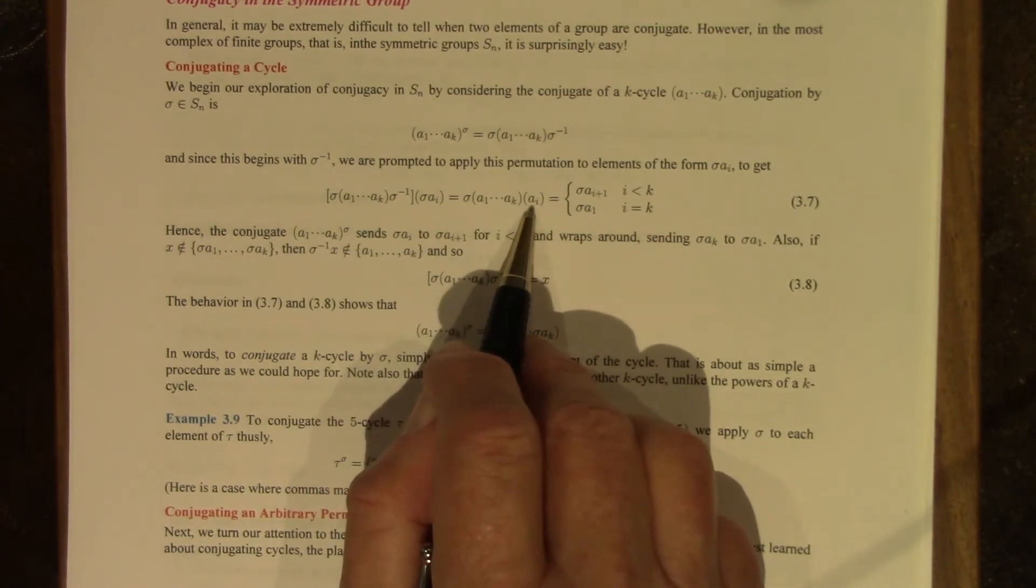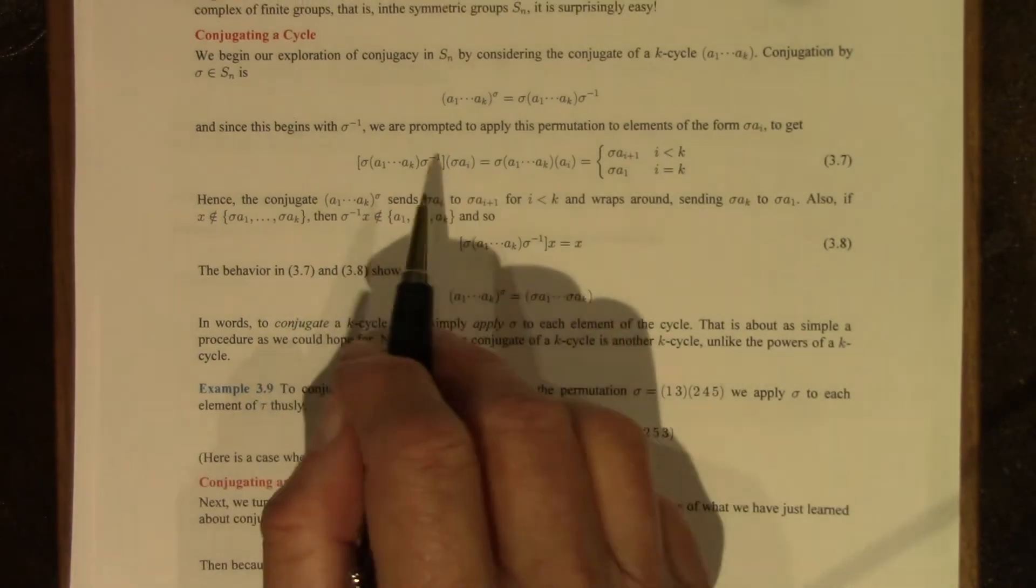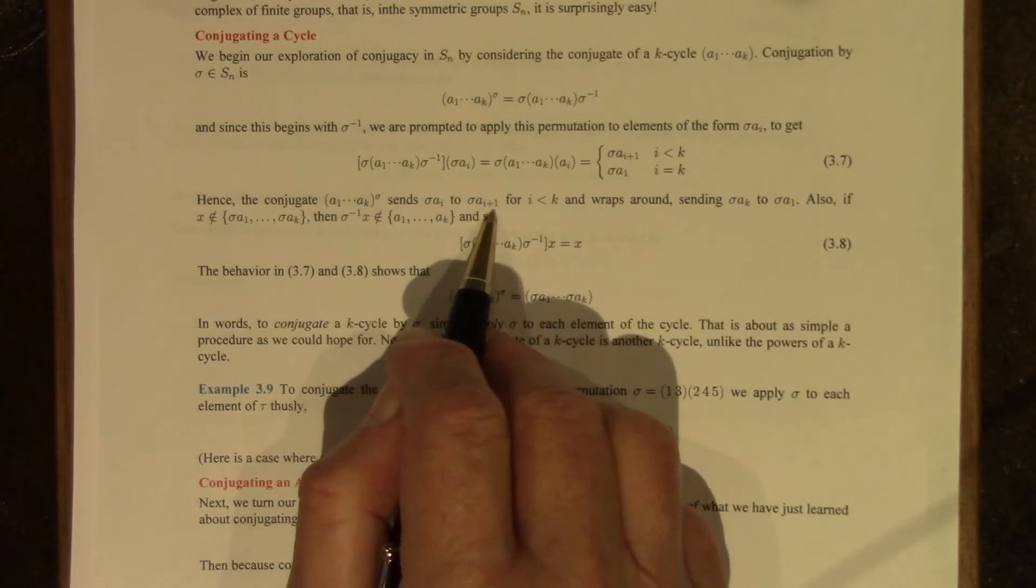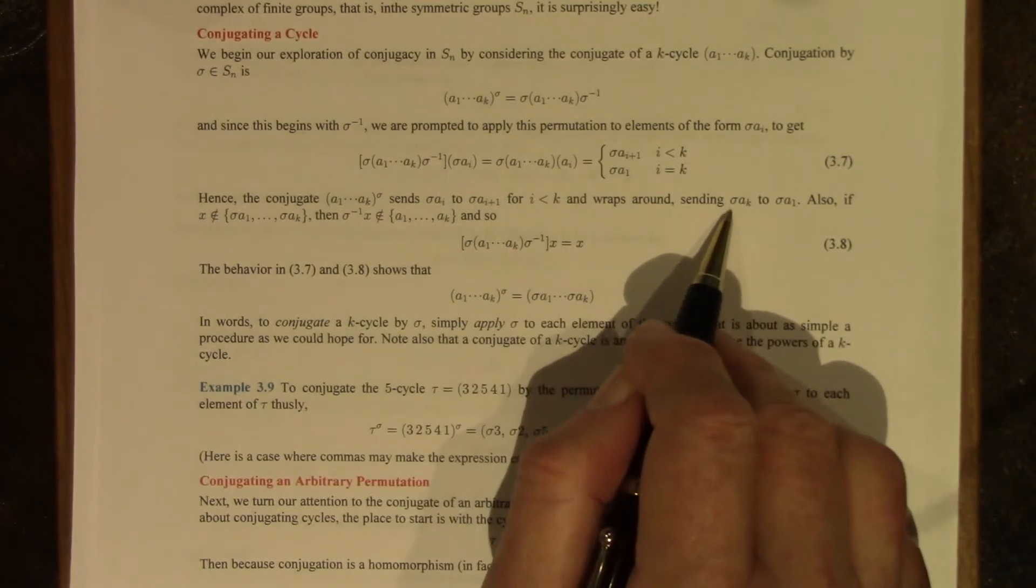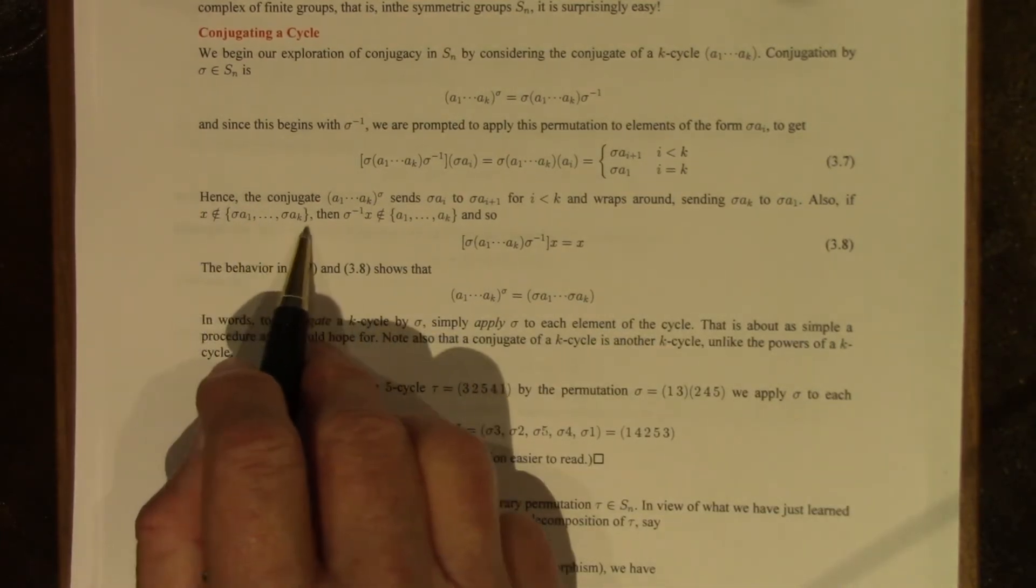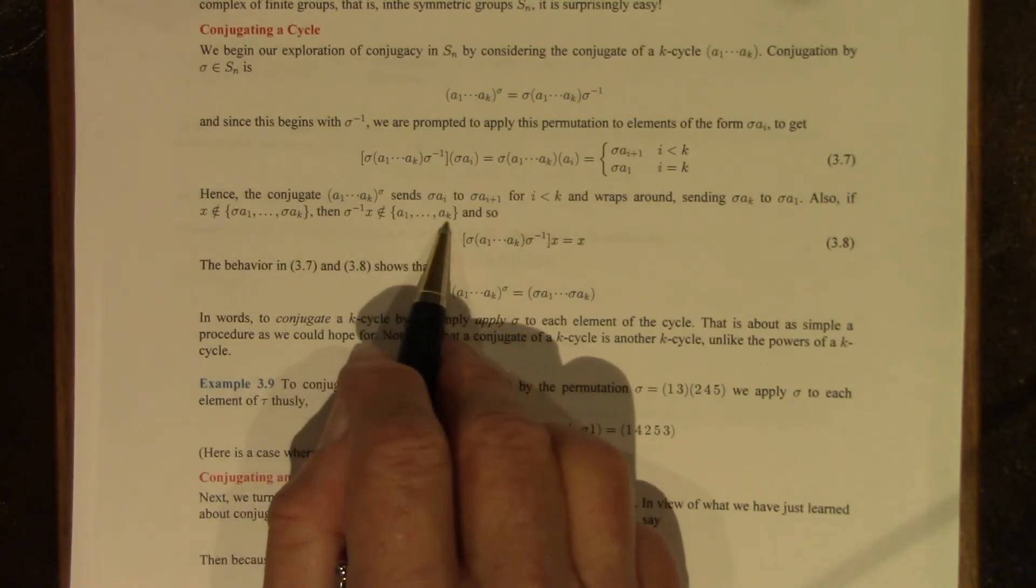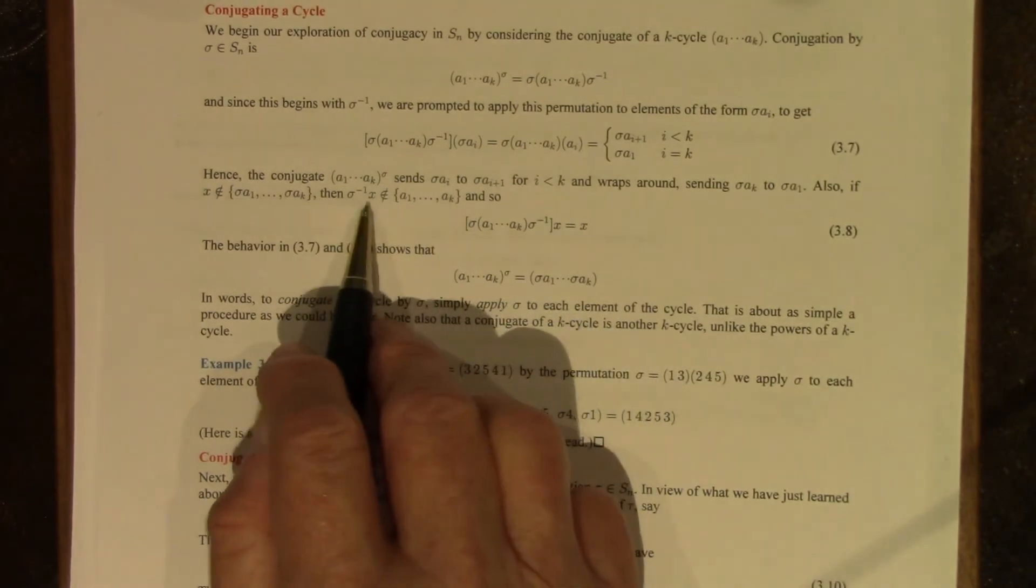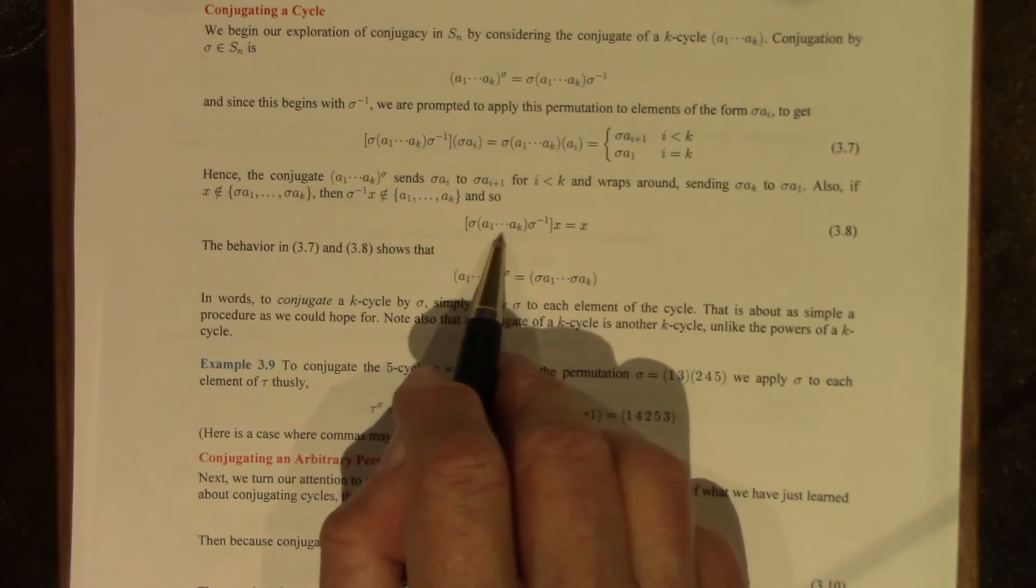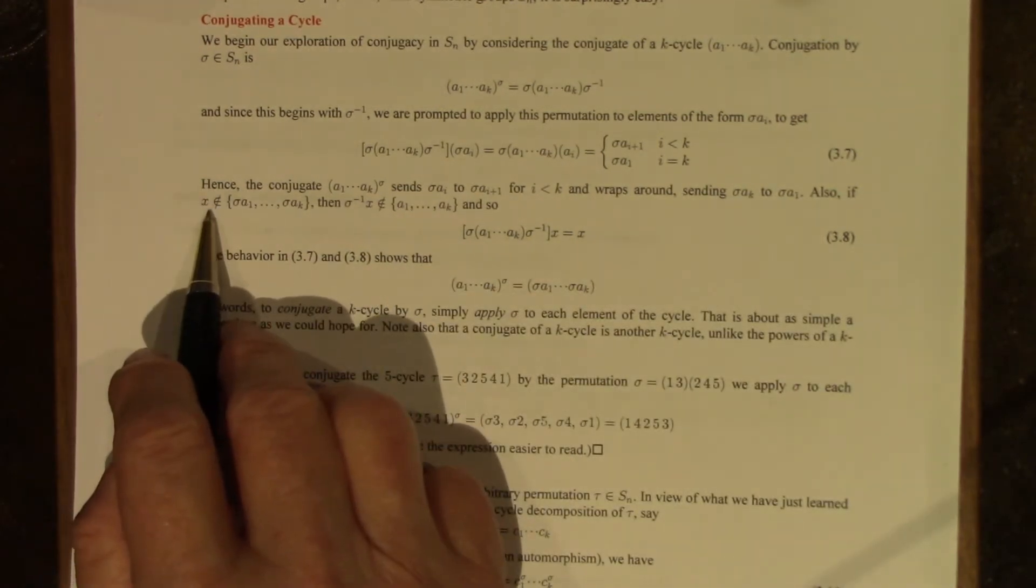Now we know a sub i goes to a sub i plus 1, or to a1 when i is k, and so we get this. So the conjugate here that we're investigating sends sigma a i to sigma a i plus 1. When i is less than k and wraps around, sigma a k is sent to sigma a 1. Moreover, if x is not one of these elements that we are applying the permutation to, then sigma inverse of x is not in the underlying set of sigma, so sigma inverse of x is not moved by this cycle, so you can pretend this cycle wasn't there, and you'll have sigma sigma inverse of x, which is x. So x is fixed by this conjugate.